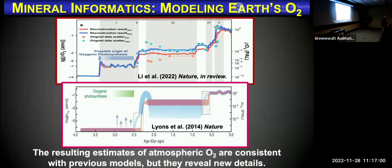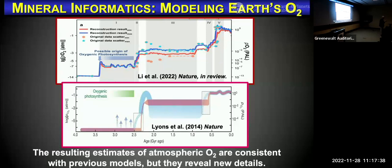An audience member questions whether the result is truly astonishing, since you're essentially using the same data for calibration. If you don't get the same results there's a big problem; if you do, it might seem like no great insight. The response: it's astonishing because only a few data points were used to pin the graph. But what about the finding of oxygenation reflected in manganese mineral oxidation states long before other models suggested? That's because minerals give us a broader time range — earlier samples that other methods don't have.